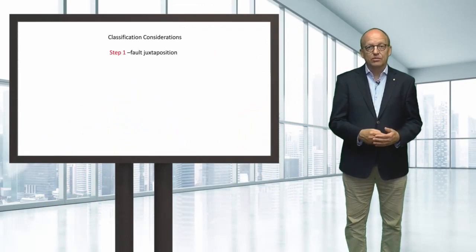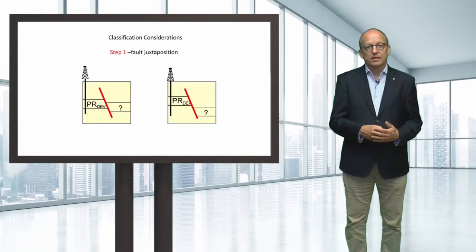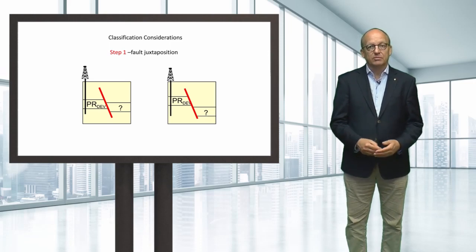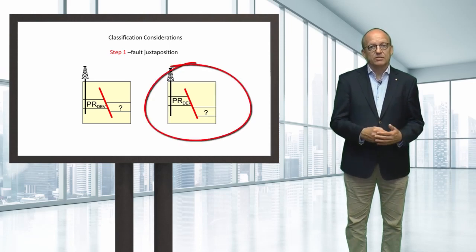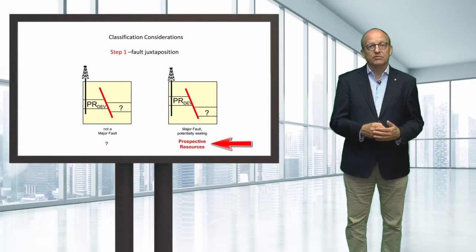Let's introduce a logical workflow for the classification of resource volumes in unpenetrated blocks. In this workflow, we follow two major steps. Step one: we must assess the fault juxtaposition. The first question we ask is whether the fault throw is less than the reservoir thickness over part of the hydrocarbon-bearing section across the fault. If this is not the case, the fault is considered a major potentially sealing fault and only prospective resources can be assigned to the unpenetrated fault block.